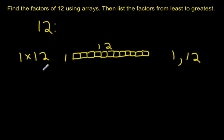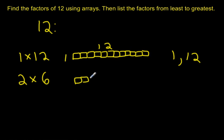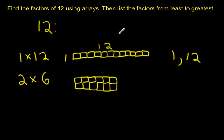After doing 1 times 12, I want to try 2 times. Does 2 times any number equal 12? Well, 12 is an even number, so I know 2 is a factor of 12 — it's 2 times 6. As an array, I'm going to draw 2 rows of 6. I'll draw one row of 6, then a second row of 6. This time it's arranged differently than my first array. So 2 and 6 are factors of 12.